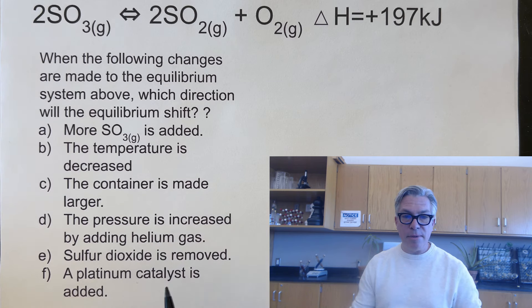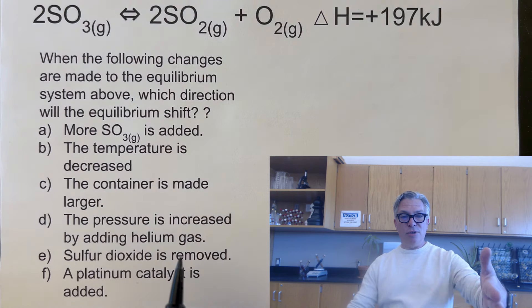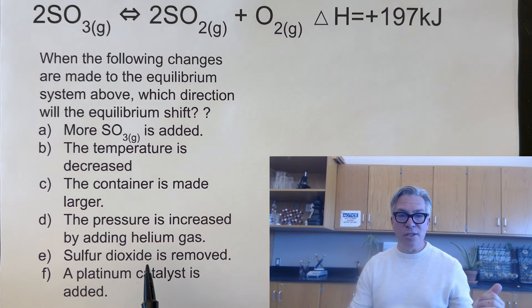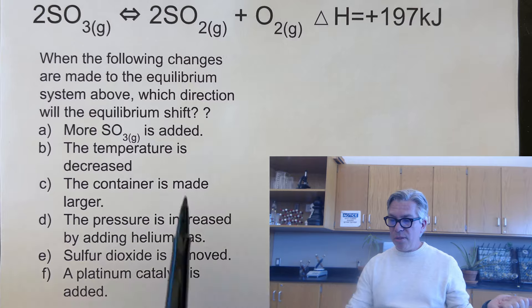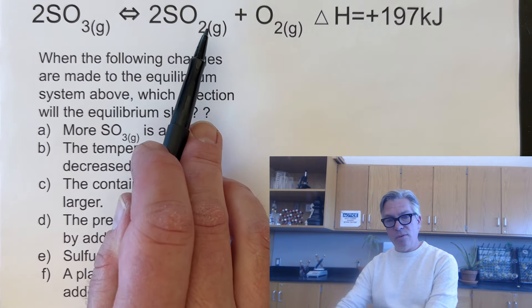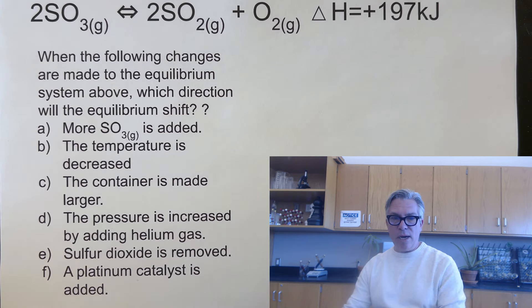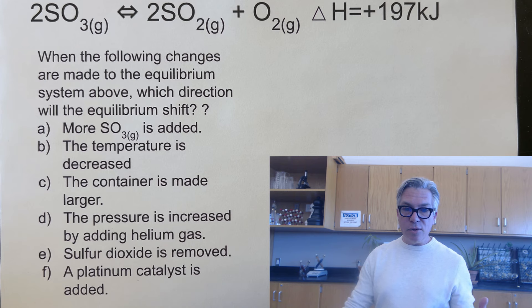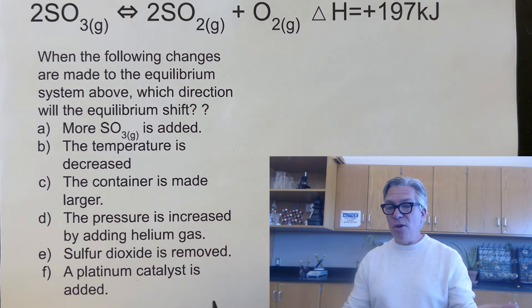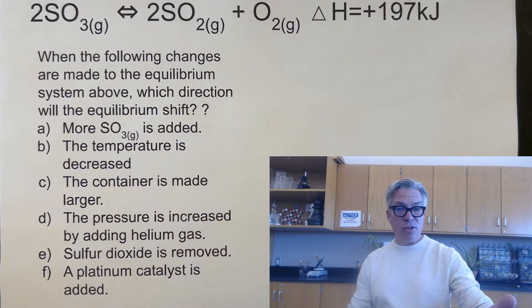If the pressure is increased by adding helium gas — remember the PSA — don't be tricked. There's no change to the system. If sulfur dioxide is removed, the system will shift right to make more of it. If a platinum catalyst is added — it sounds important, but PSA number two: nothing is going to happen. There will be no change to the equilibrium position, though it might get there faster.